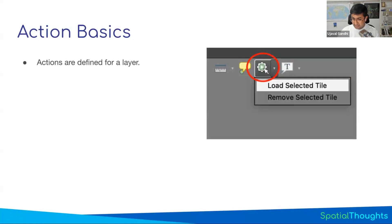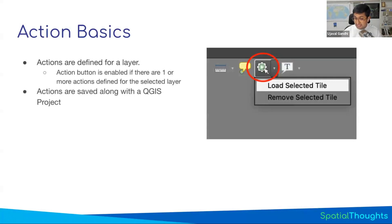Actions are defined on a layer. You pick the layer where you want to trigger the action from, and you can have multiple actions defined on each layer. Once the user selects the layer, if there are actions defined, the action button in your toolbar becomes active and the user can pick and trigger the action. As mentioned, actions are saved inside a QGIS project — whoever has the project will have the actions, and you don't need to do anything special to send them the Python code, as it's saved within your QGIS project file.